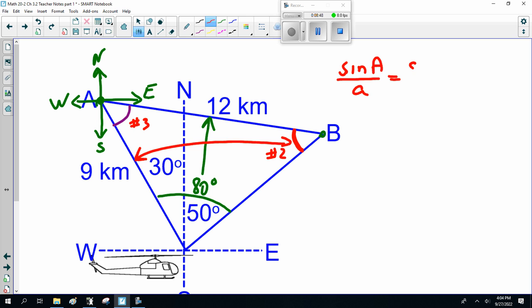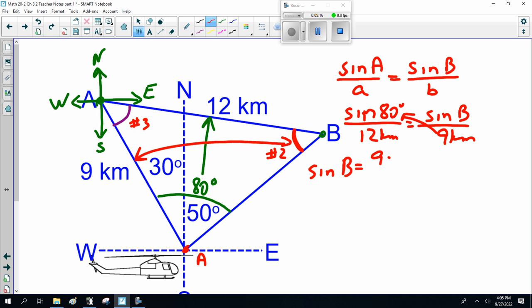So, sine of A over A equals sine of B over B. Now, I'm arbitrarily, I'm going to call this point A. So, this is sine of 80 degrees, total angle, over 12 kilometers, equals sine of B over 9 kilometers. So, sine of B cross multiply is 9, sine of 80 over 12.